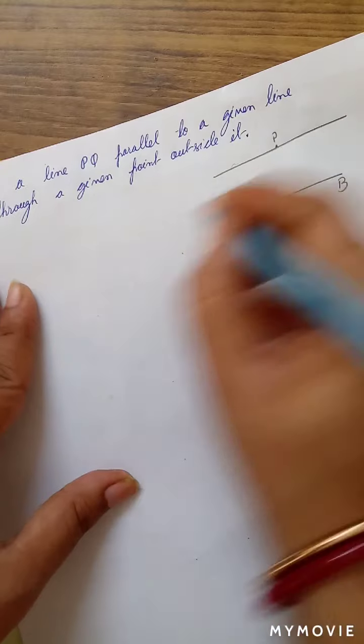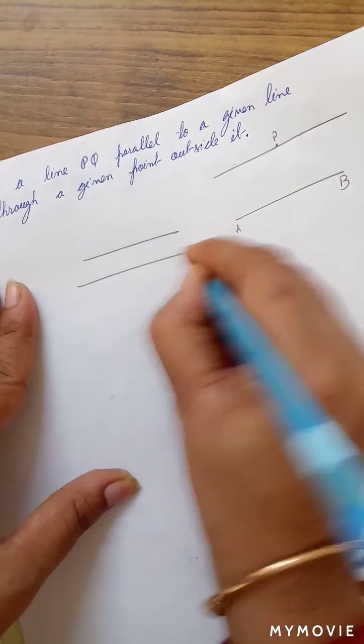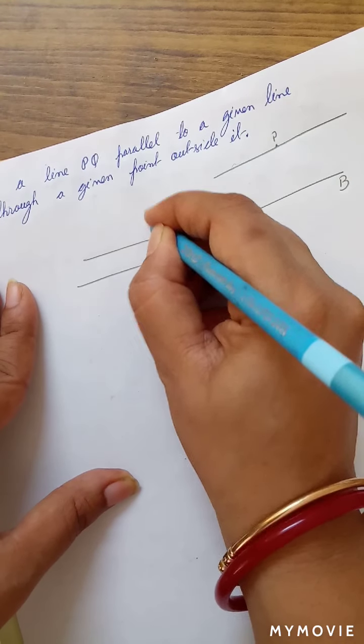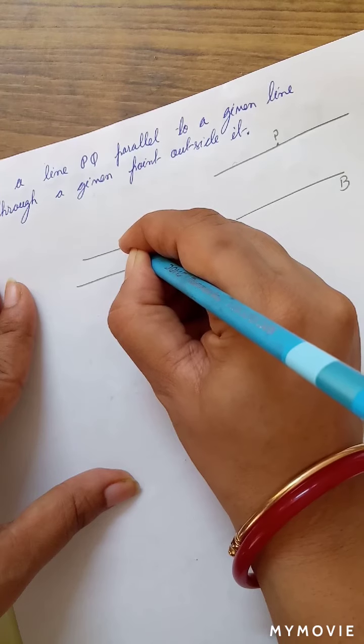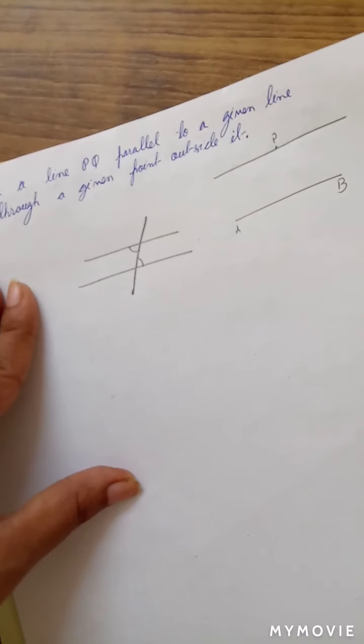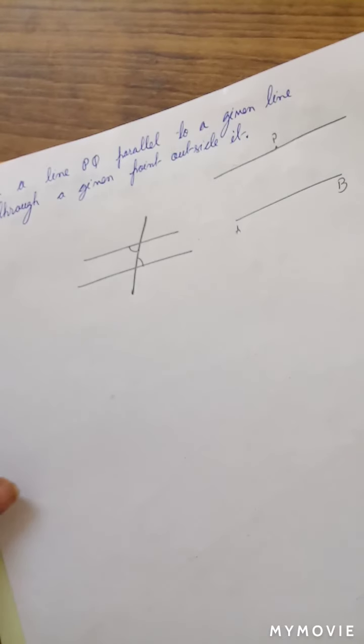Now we will use this principle: that when there are two parallel lines and two parallel lines are cut by a transversal, the alternate angles are always equal. We know that. So we will use this principle to construct a parallel line opposite to a line. Let's do it.